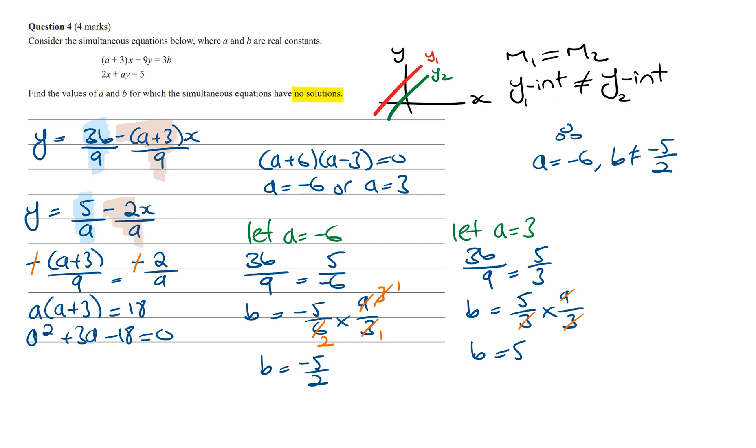And so when B is equal to 5 and A is equal to 3, we're going to get the same Y-intercept. And so when the value of A is equal to 3, the value of B cannot equal to 5, but it can equal any other number.